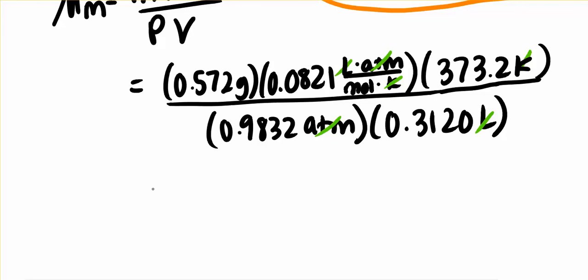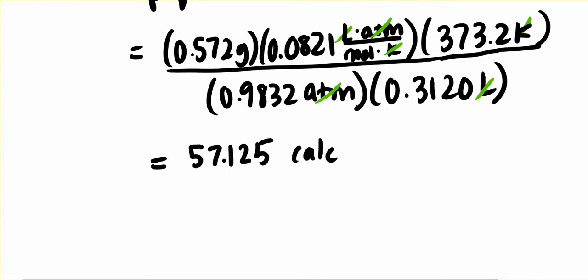Now put all of this into your calculator and make sure you get what I'm getting, because there's a common mistake when you enter these into your calculator. My calculator gives me this number. If you're getting a number a lot different than that, make sure that you're dividing by both things on the bottom. In other words, you should enter this in your calculator: 0.572 times 0.0821 times 373.2 divided by 0.9832 and then divided by 0.3120. Always hit the divide button before both things on the bottom. So check and make sure you're getting that. It's a common issue.